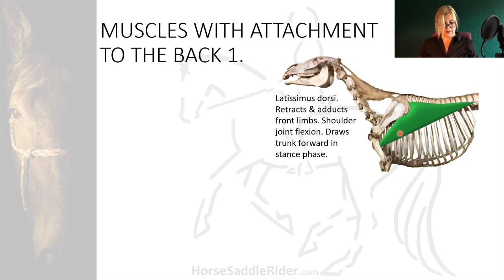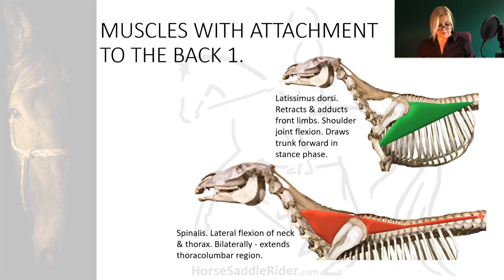Spinalis, attached as far back as L5, can laterally flex the neck and thorax, and when both elements are recruited simultaneously, extend the thoracolumbar region. It is another important muscle for jumping when the neck and lumbar region need to be controlled for landing.